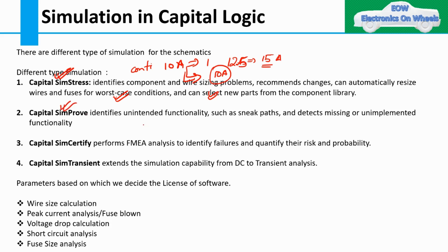Next is Capital Sim Prove, where you identify sneak paths and detect missing or unimplemented functionality. Then Capital Sim Certify performs FMEA analysis to identify failures and quantify risk and probability. Finally, Capital Sim Transient performs DC-to-transient analysis. So these are the four different licenses: Capital Sim Stress, Capital Sim Prove, Capital Sim Certify, and Capital Sim Transient.